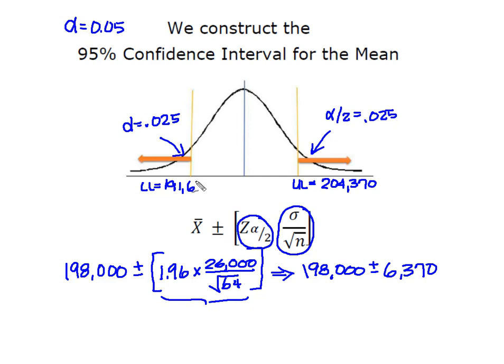Our hypothesized or established value for mu from our problem was the AMA's established mean of $189,000 so I want to look and see where on this number line does $189,000 fall and it's somewhere down here below this $191,630.